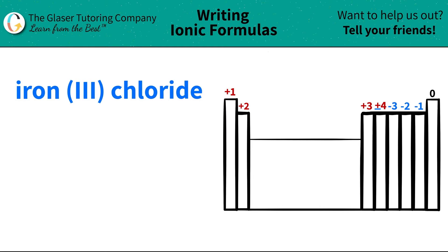Today we're going to be writing the formula for the ionic compound iron chloride. Now the first thing we got to do is we got to find out what these elements are. So we got to use the periodic table.